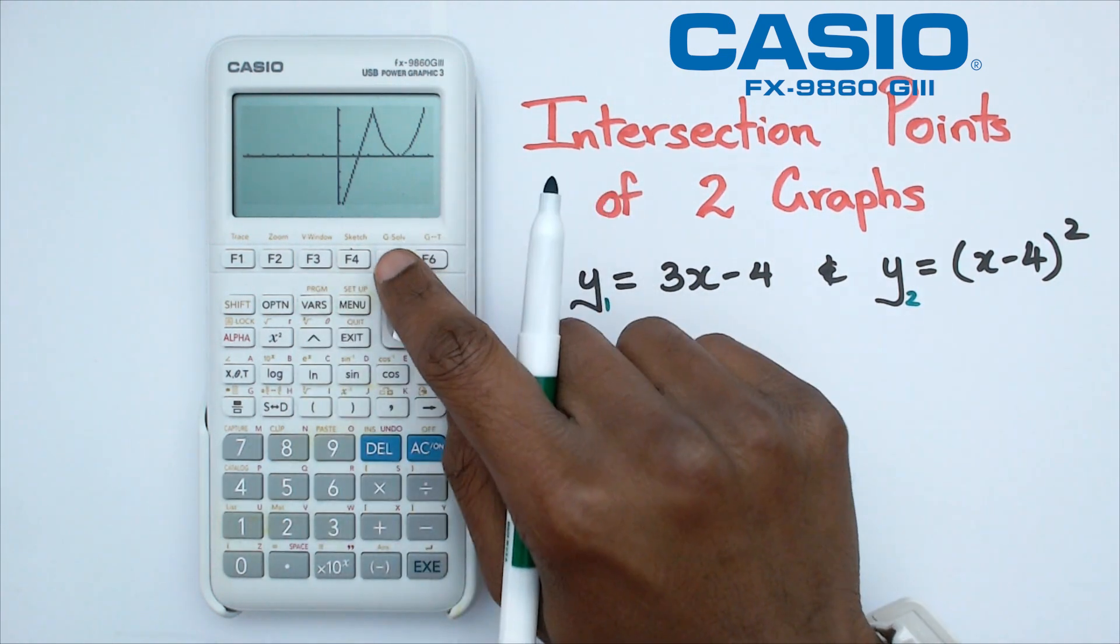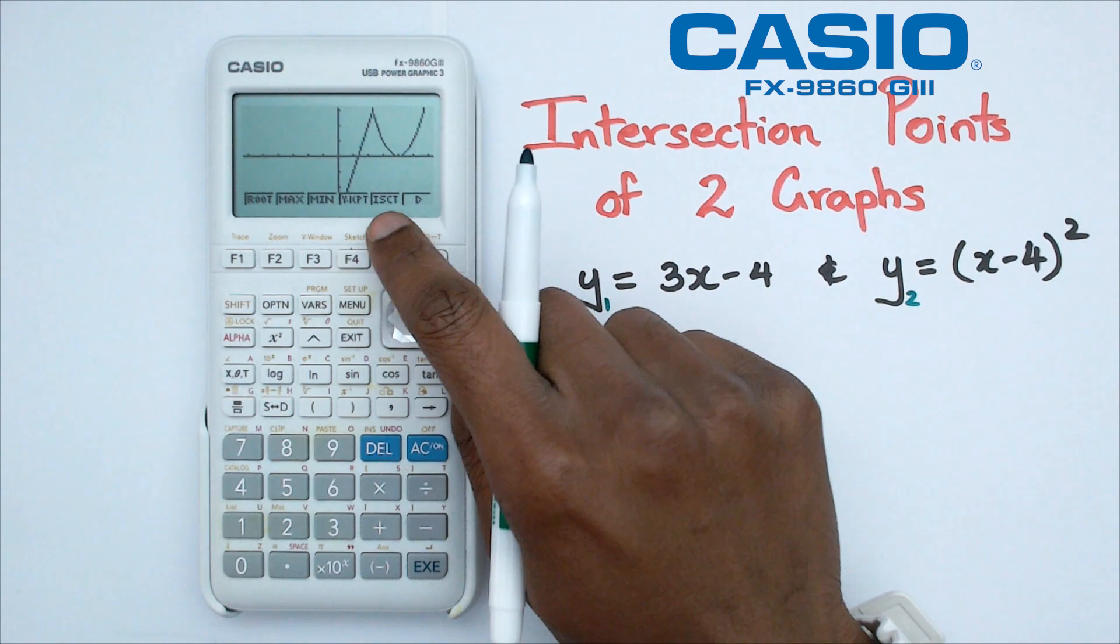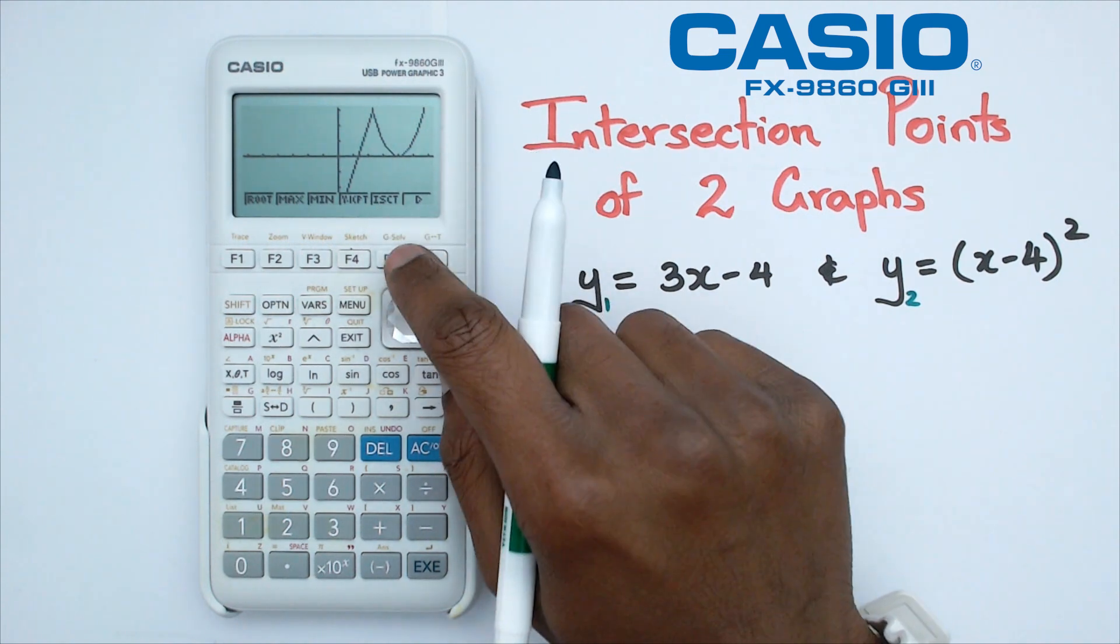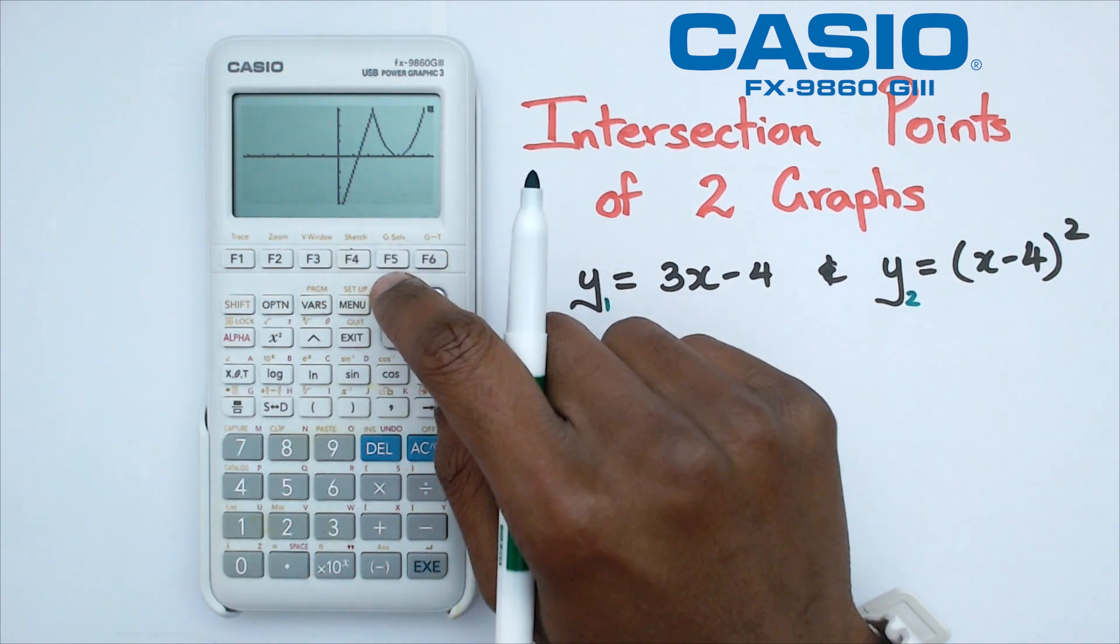So the way we're going to do that is we're going to click on G-solve. And as you can see, there's a little button ISCT, which is intersection point. So I click on it.